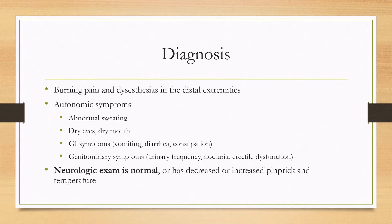Symptoms can include burning pain and dysesthesias in the distal extremities. There can be autonomic symptoms such as abnormal sweating, dry eyes, or dry mouth. There can be GI symptoms such as vomiting, diarrhea, or constipation, and genitourinary symptoms such as urinary frequency, nocturia, or erectile dysfunction.